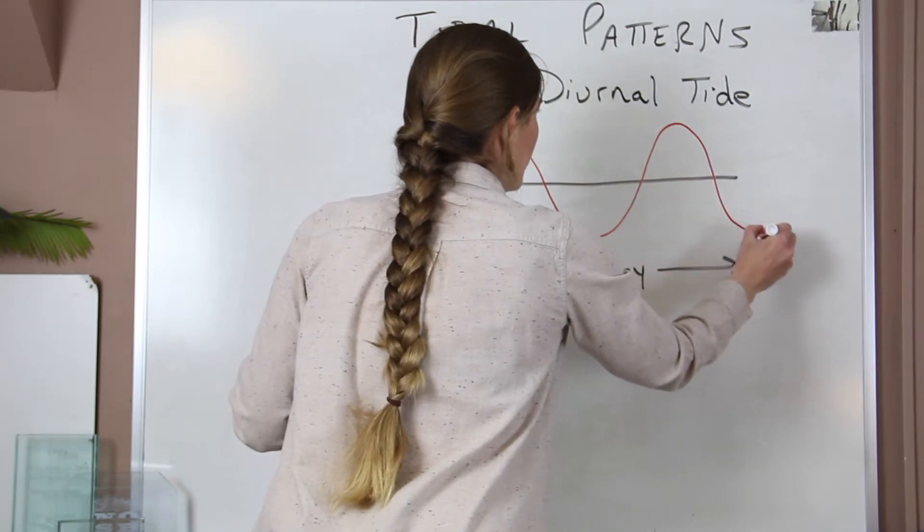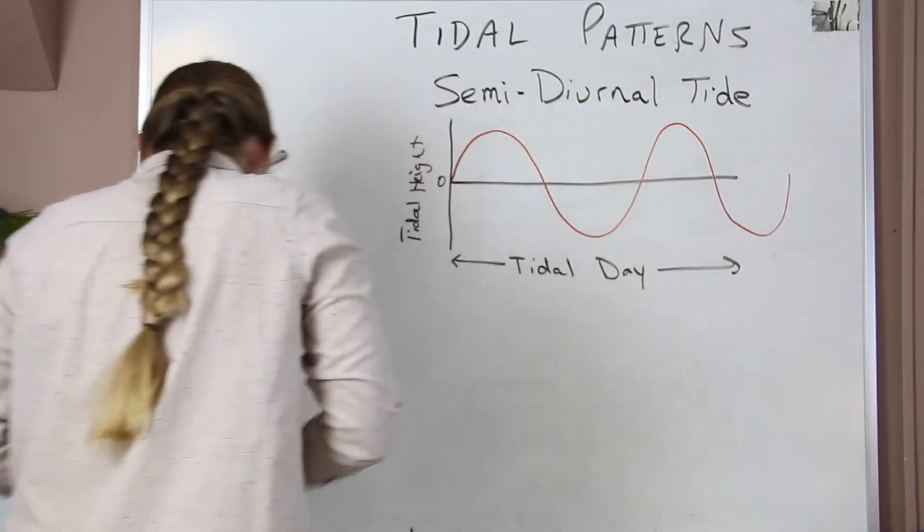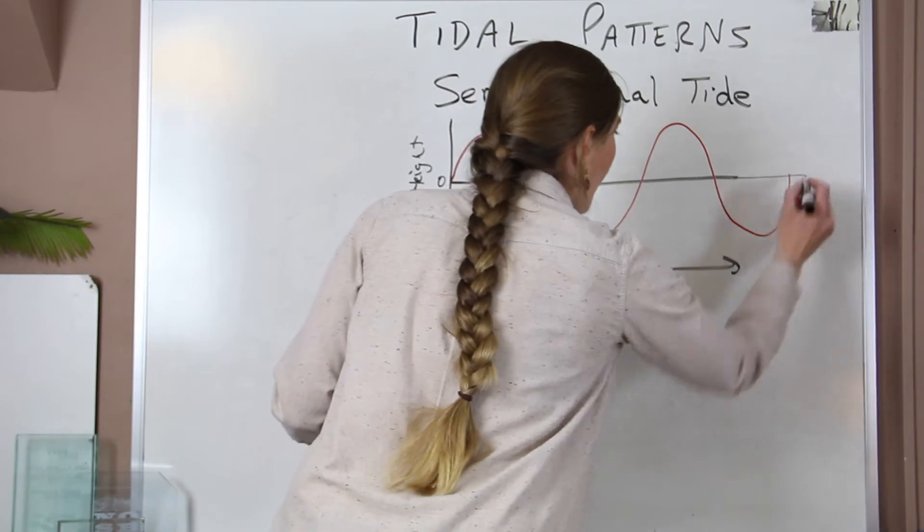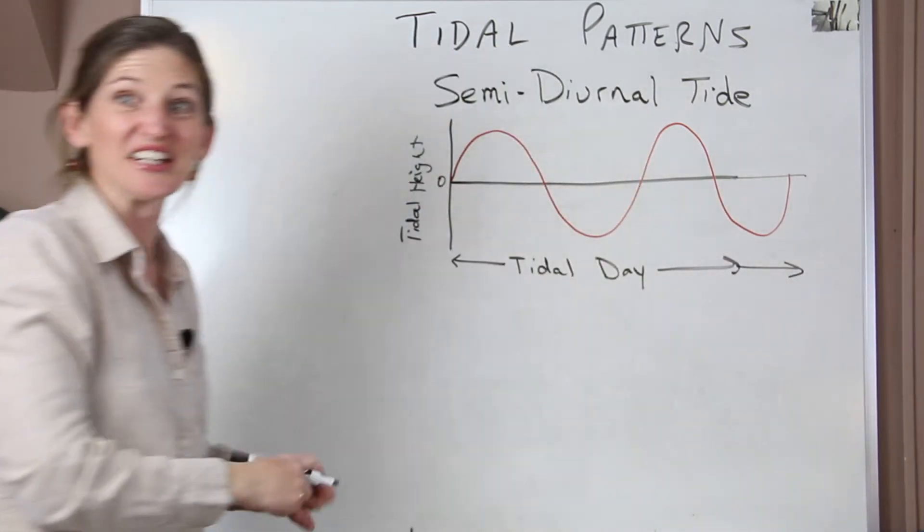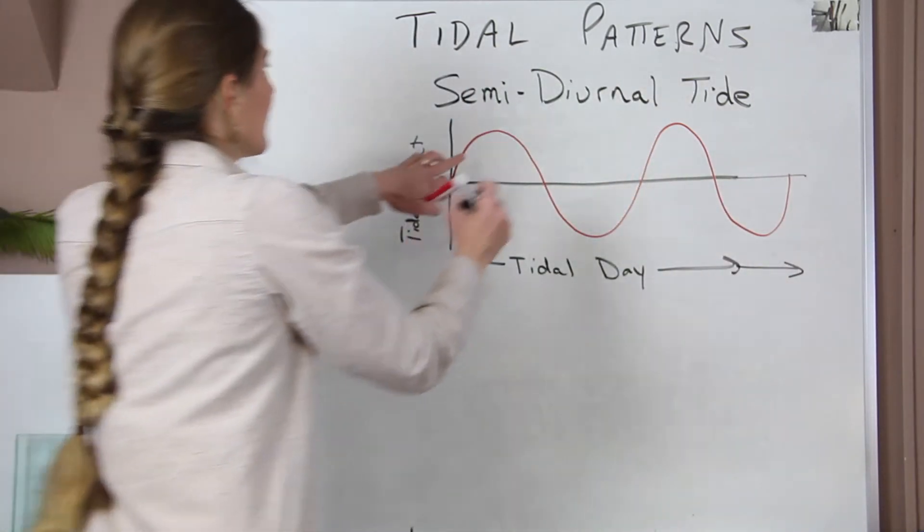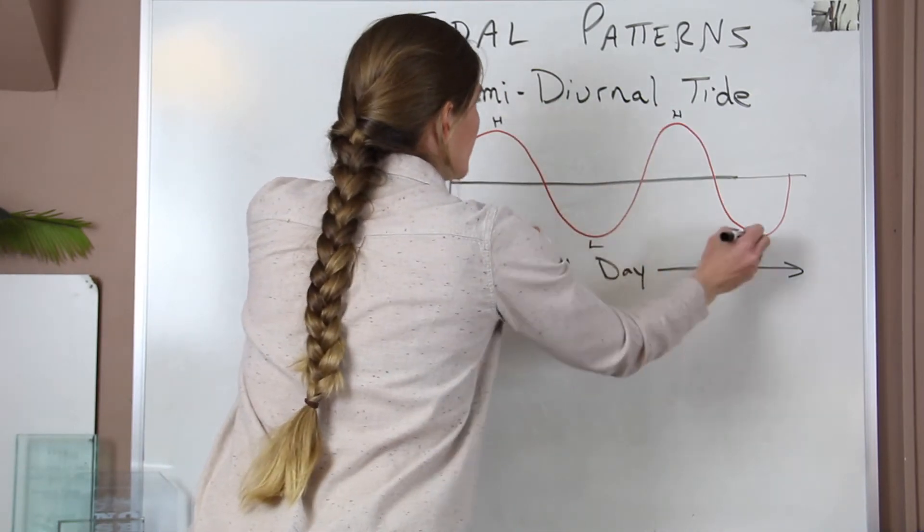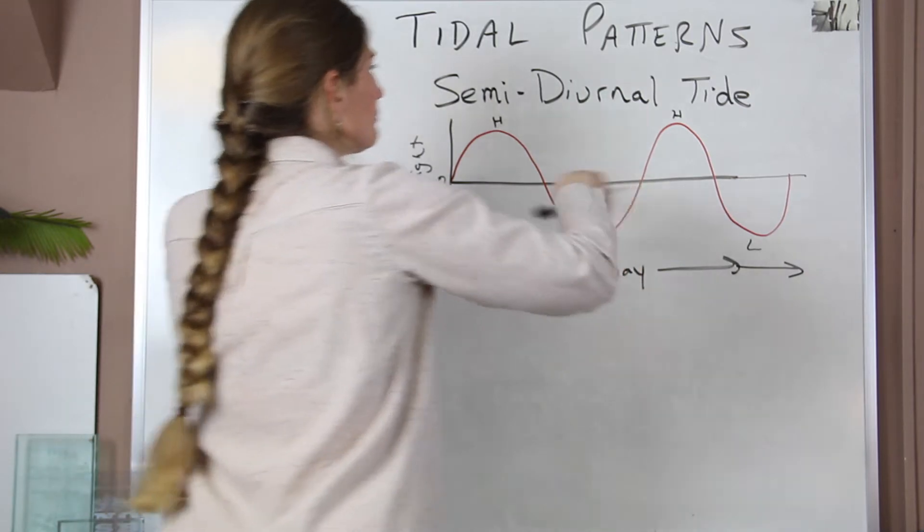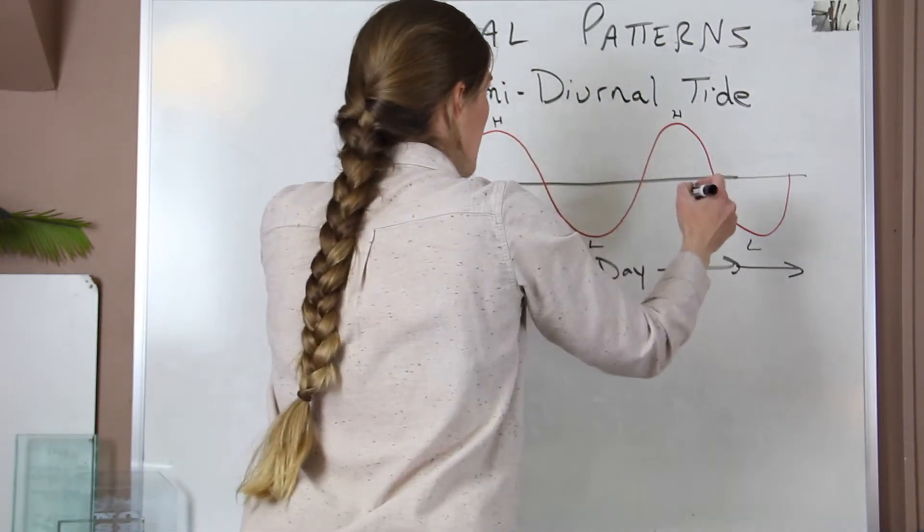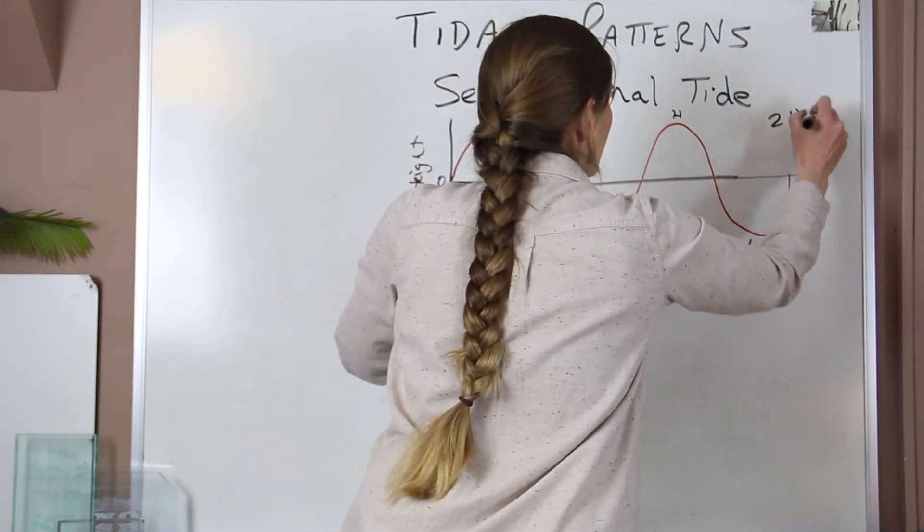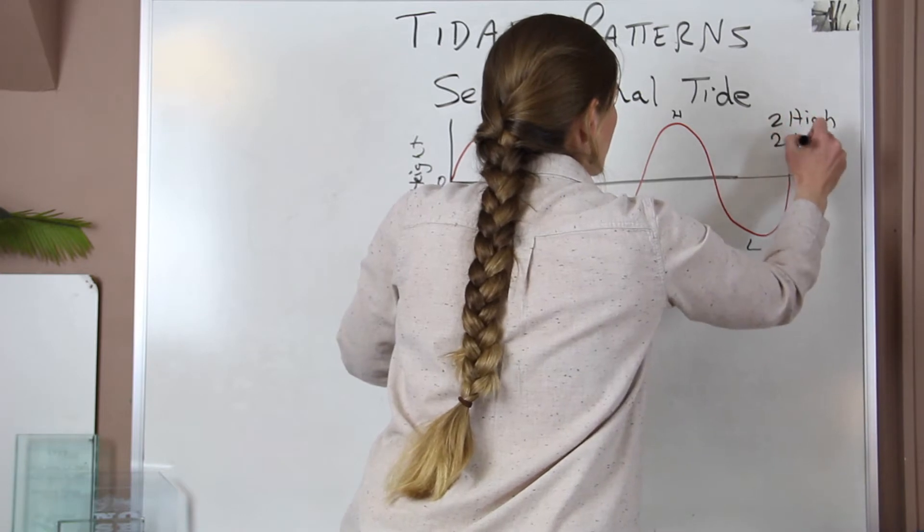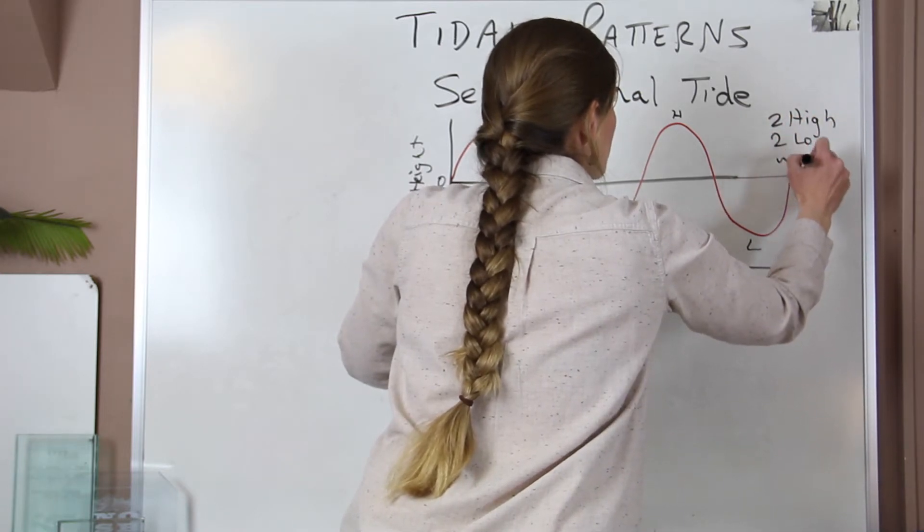And then the low. So what we see again is two highs, that's the high tide, and two low tides during the lunar day and they're of about equal size. So two high, two low, and then about the same size in that lunar day.